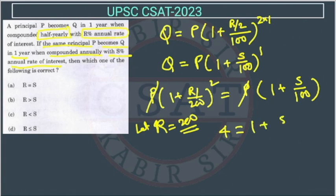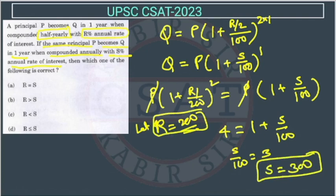So this will be 4 is equal to 1 plus S upon 100. So I will get S upon 100 is equal to 3. So S will be 300. So we assume R is 200 and then S is 300. It means R is less than S. So the answer is option C.